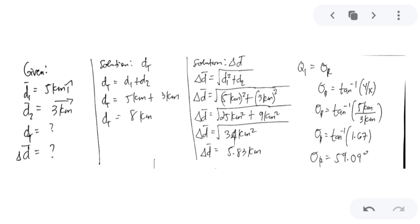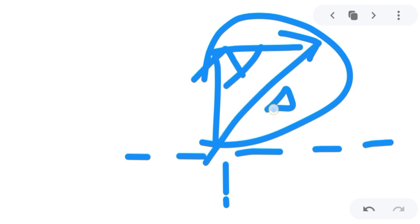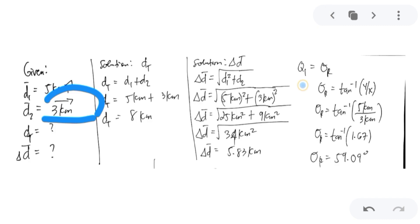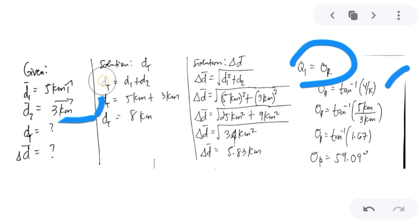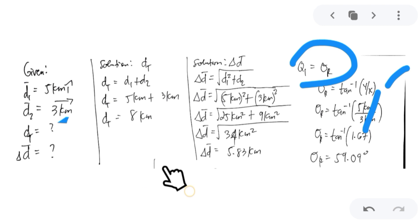Plotting the vectors on the Cartesian plane — positive y-axis (north) and positive x-axis (east) — places this in quadrant 1. Since it is quadrant 1, the direction equals the reference angle: inverse tangent of y over x = inverse tangent of 5 over 3 = inverse tangent of 1.67 = 59.09 degrees. So the displacement is 5.83 km at 59.09 degrees.